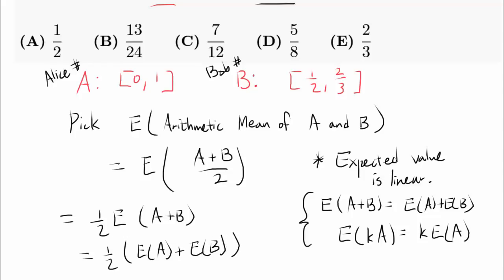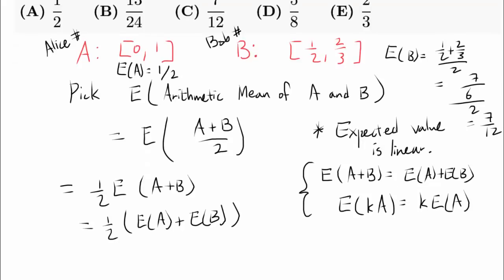And expected value is the value that you expect, the weighted mean of the probability. So in this case, expected value of A is going to be the number right in between 0 and 1, or 1/2. Expected value of B is going to be the number right in between 1/2 and 2/3, which is going to be 7 over 12. So we simply have 1/2 times 1/2 plus 7 over 12, also known as 1/2 times 13 over 12, or 13 over 24.